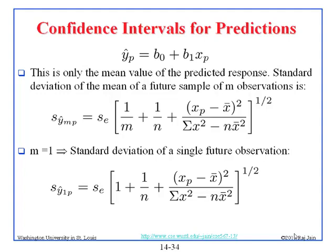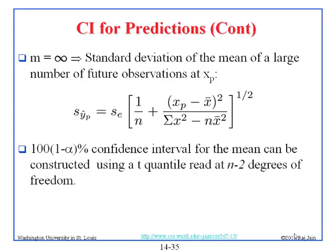If you are predicting the mean of M observations, the formula for standard deviation is: standard deviation of error times the square root of 1/M plus 1/N, where M is the future observations and N is the current sample size. If you predict one observation, this becomes 1 upon 1, which is 1. If you predict infinite observations, 1/M goes to 0. This prediction has degrees of freedom N minus 2, because x-bar and se both came from the sample.